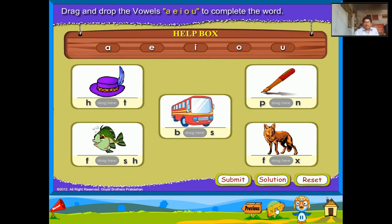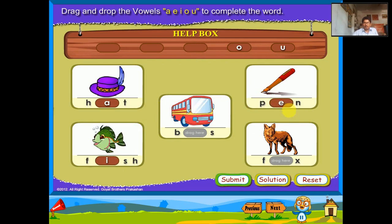Drag and drop the vowels A, E, I, O, U to complete the word. Hat, Fish, Pen, Box, Bus.